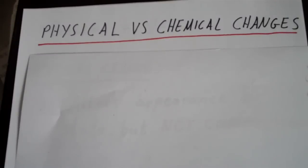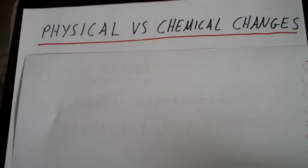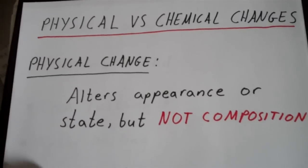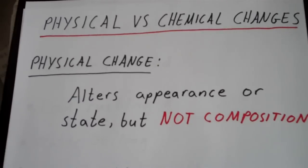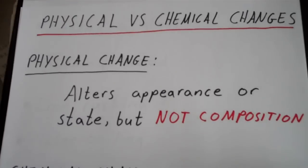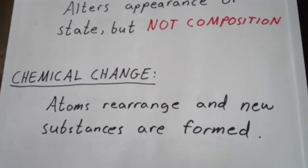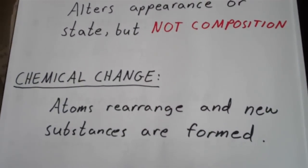This is going to be a quick video about physical and chemical changes. A physical change is a change that alters the appearance or the state of matter, but not the composition of matter. In contrast, in a chemical change, atoms rearrange and new substances are formed.